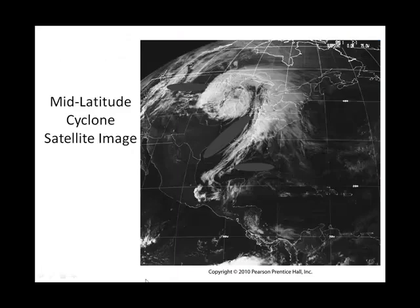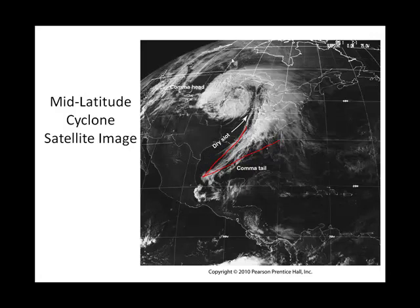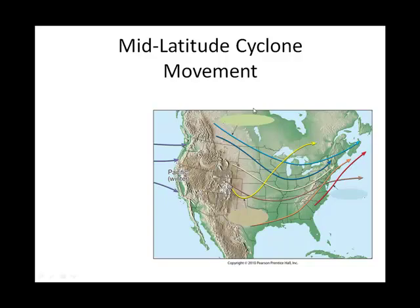This is a satellite image of cloud cover. You can see the comma tail here and the comma head up there. Does it look like a comma to you? This is what we call the dry slot, and it is characteristic of a mid-latitude cyclone.